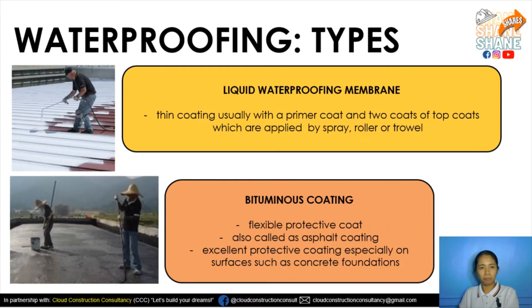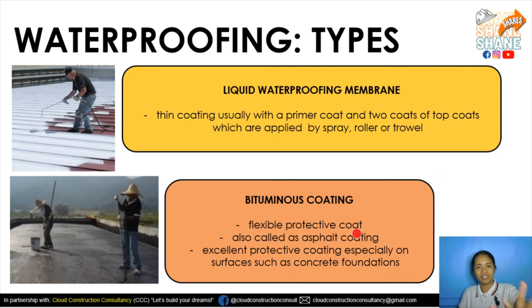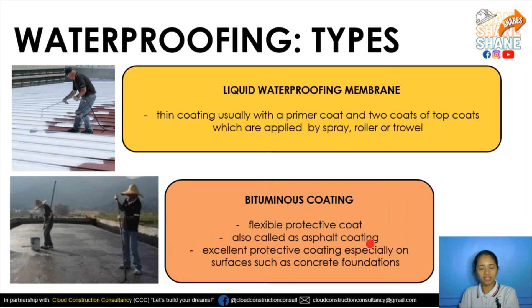The third type is the liquid waterproofing membrane. As the name suggests, it is liquid — a thin coating applied with a primer coat and two coats of top coat, applied by spray, roller, or trowel. The fourth type is bituminous coating, also called asphalt coating. It is a flexible protective coat that can be applied using a brush or roller, and is an excellent protective coating especially for surfaces such as concrete foundations.